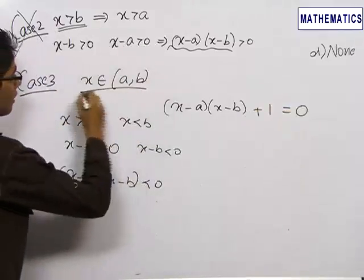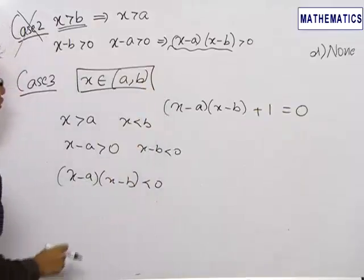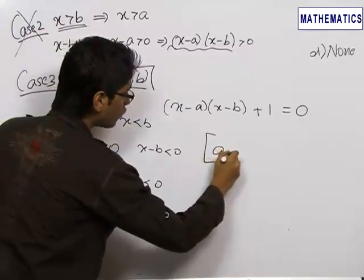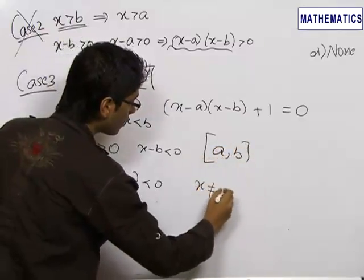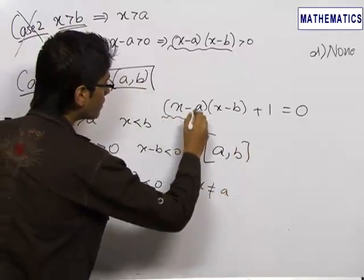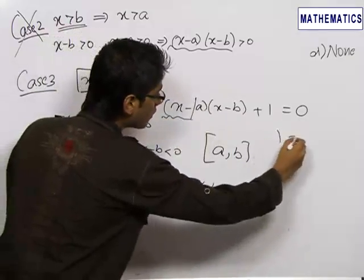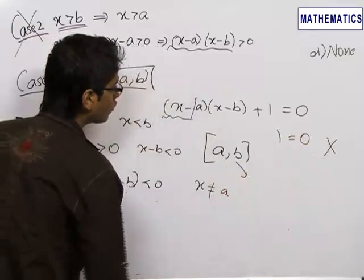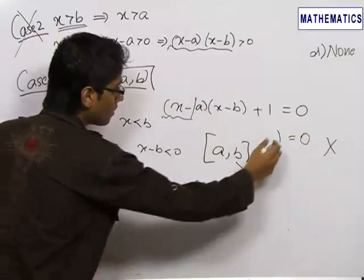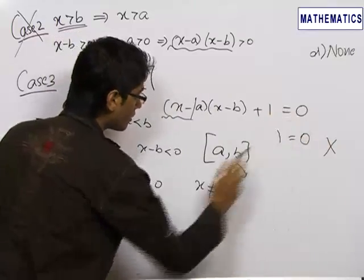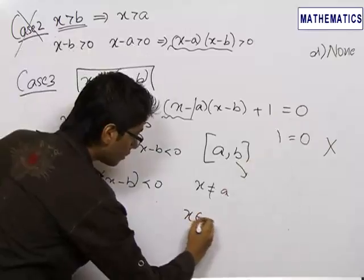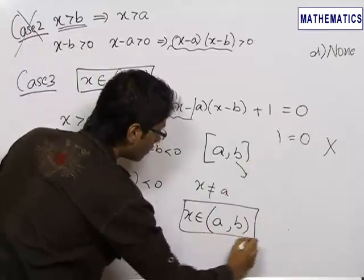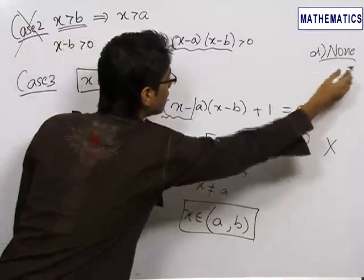Hence, our roots will definitely lie in the range a to b. Our first option was the closed bracket a to b, but x cannot equal a because if x equals a, that factor becomes 0 and we get 1 equals 0, which is rubbish. Similarly, x cannot equal b, as substituting x equals b again gives 1 equals 0. Hence, the roots of the quadratic equation lie in the open interval a to b, which is option D — none of the above.